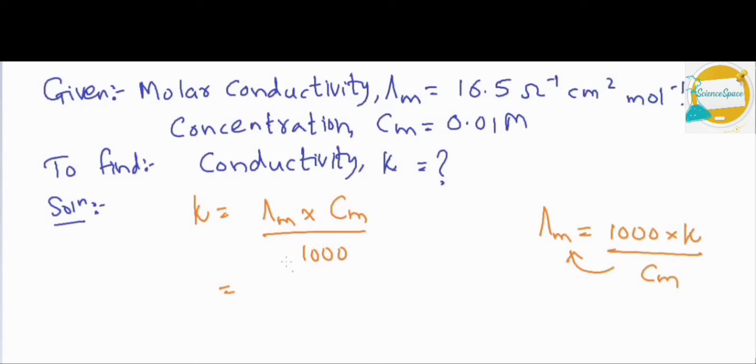When we put the values in this formula, that is 16.5 molar conductivity value times cm value 0.01, upon denominator 1000 will come as it is.